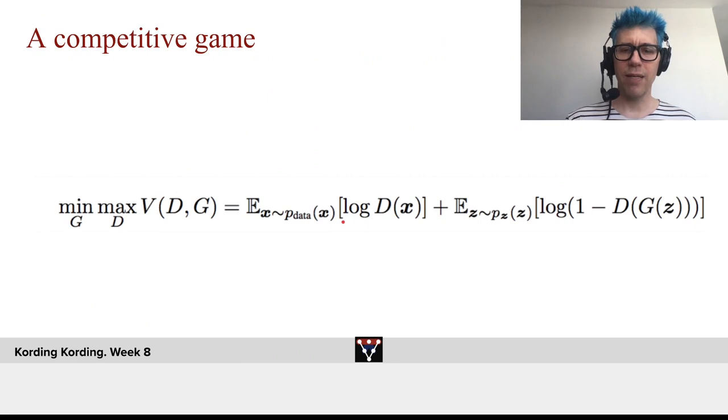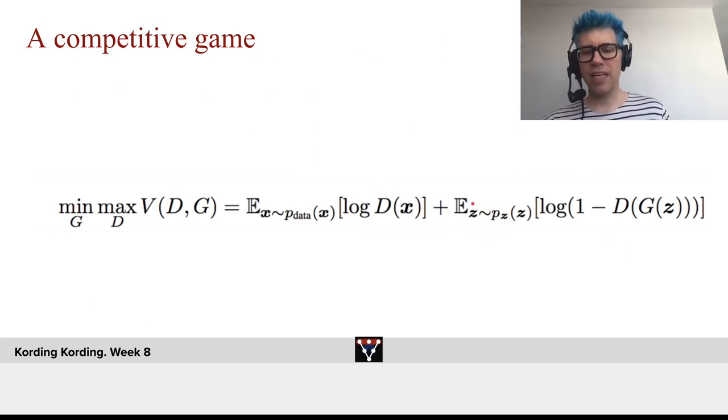And now this is the expected value over the data distribution X of the log discriminator values. This is what the discriminator wants to assign high values to.